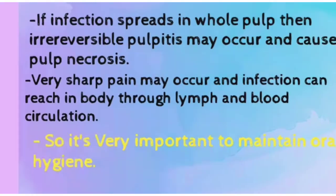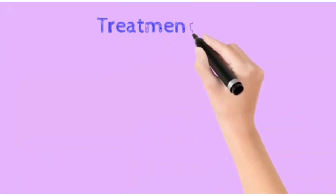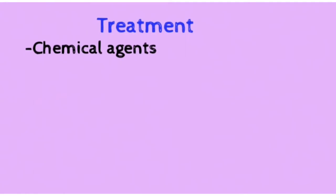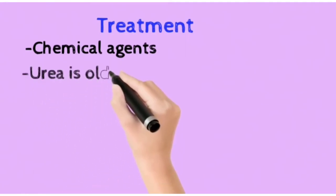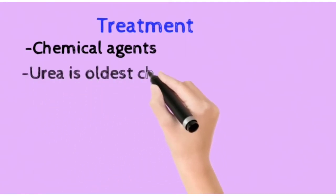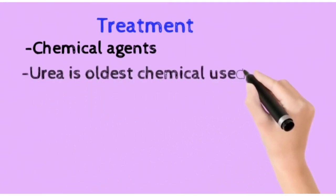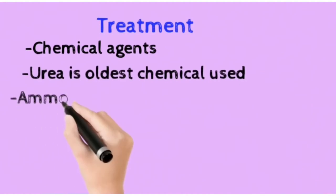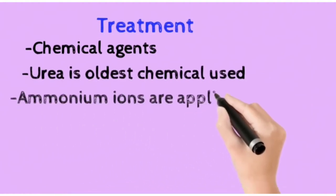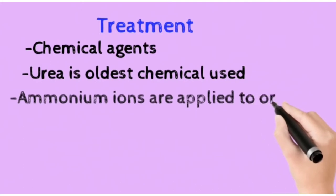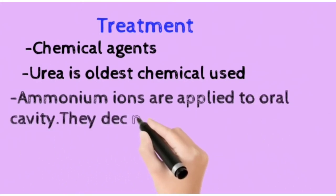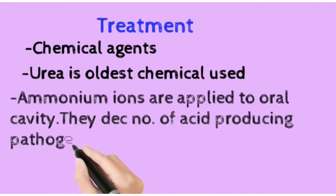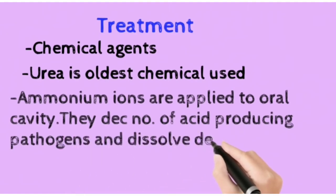Let's talk about some of the treatments of dental caries. First, we use chemical agents — urea is the oldest chemical that is used. Ammonium ions are also applied to the oral cavity because they decrease the number of acid-producing pathogens and dissolve the dental plaque as well.